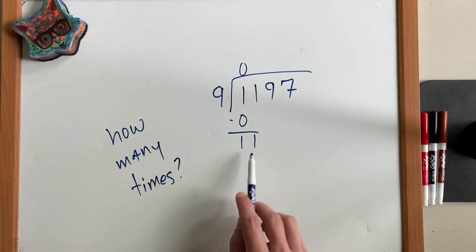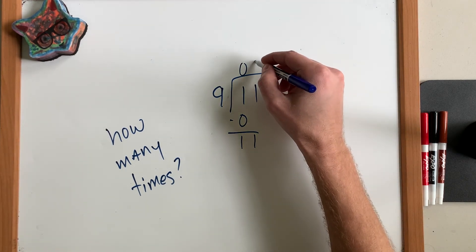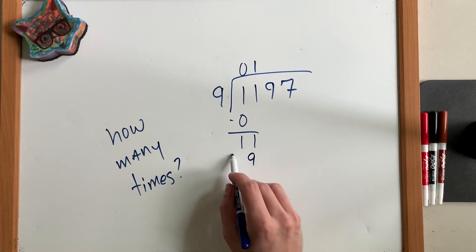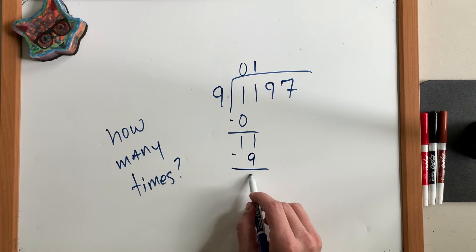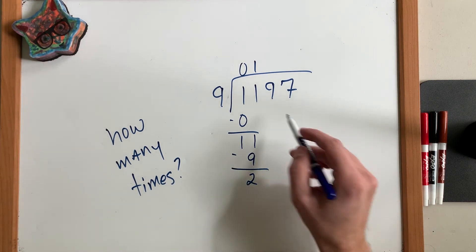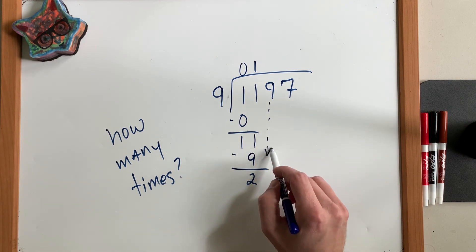Can 9 fit into 11? It surely can. It's going to go in once. 9 times 1 is 9. We subtract. We get 2 left over. Because 11 minus 9 is equal to 2. And now we're going to bring down the next digit.